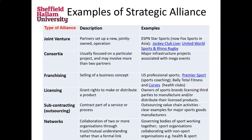Finally, we have networks — collaboration of two or more organisations through mutual trust and some kind of formal agreement. This could be governing bodies of sport working together, such as a racket sports alliance or rugby codes working together, and also sports organisations collaborating with non-sport organisations, such as health and sport working together. Not all of these alliance options will be appropriate for every organisation, but I want you to be aware of the range of strategic alliances available, as these are key tools of strategic growth.